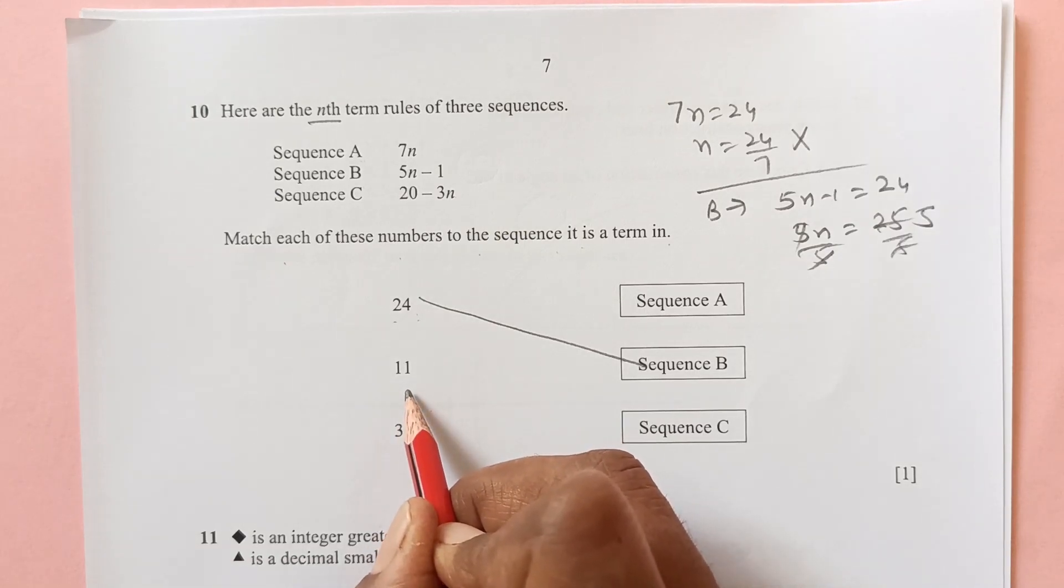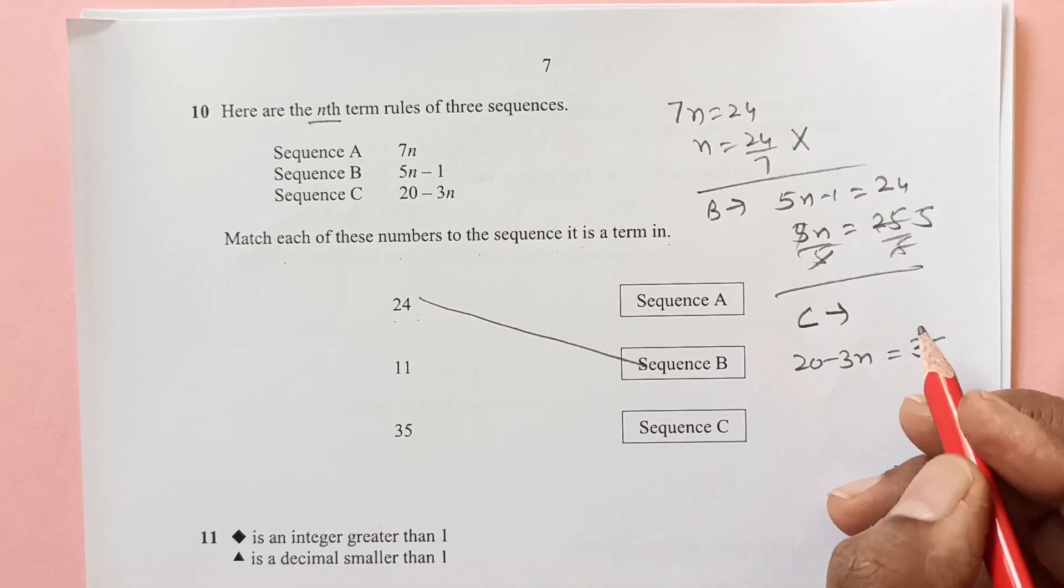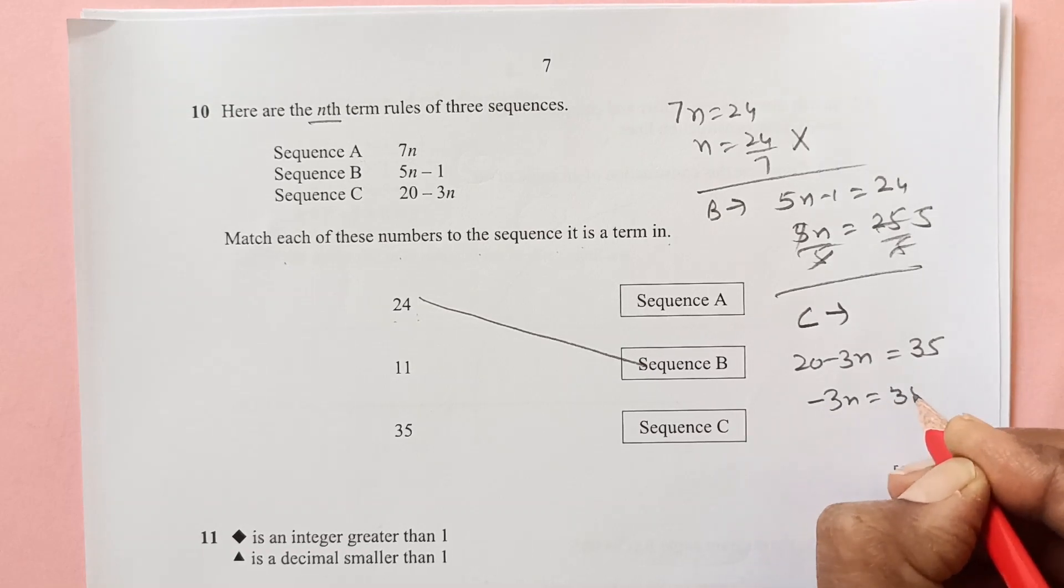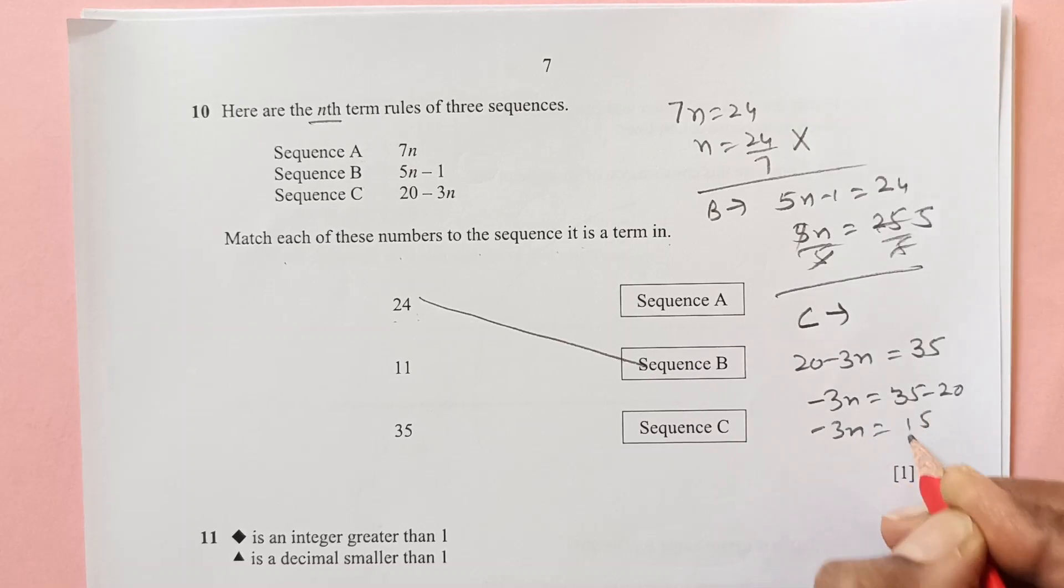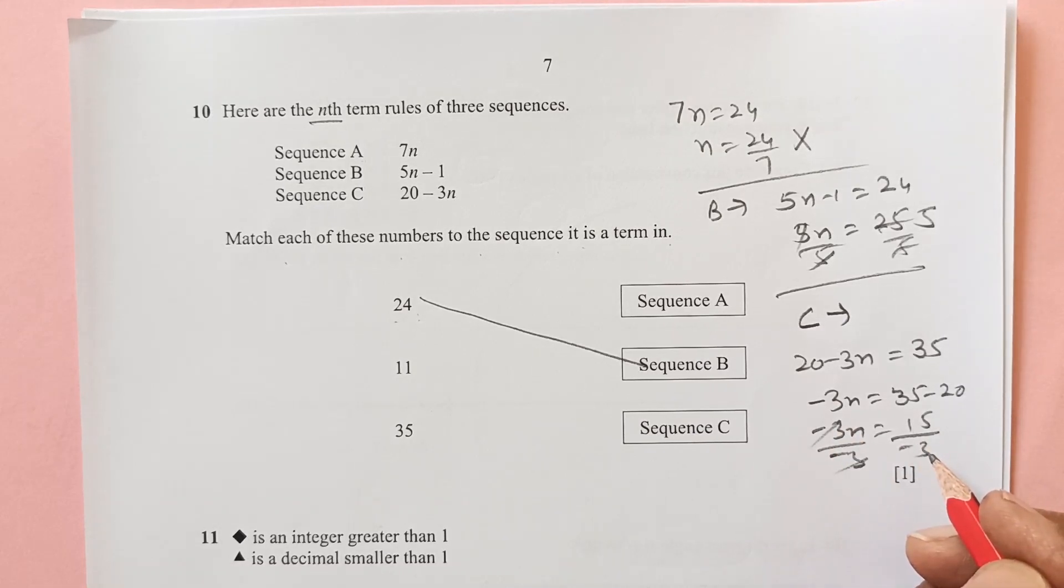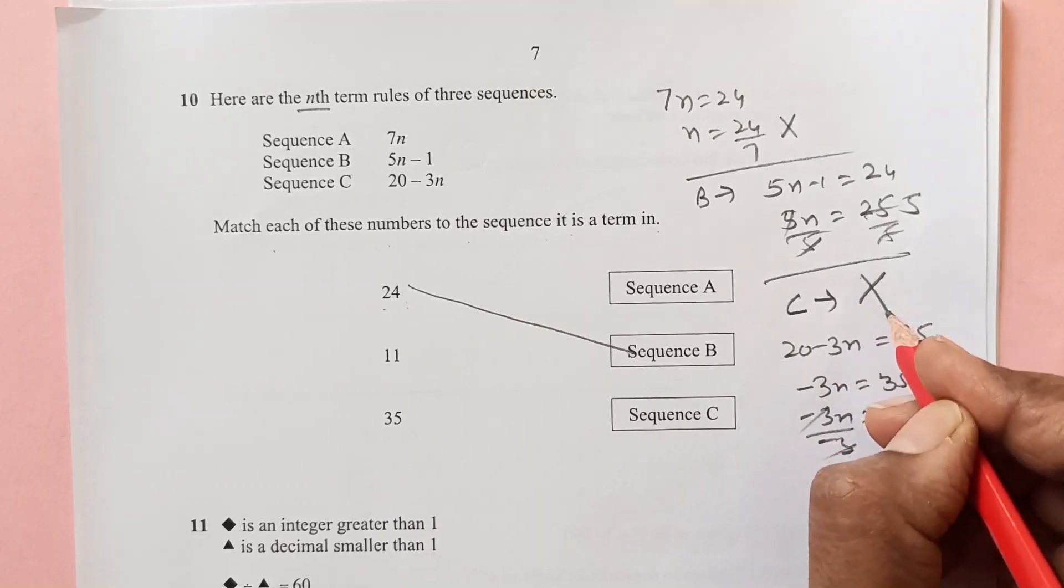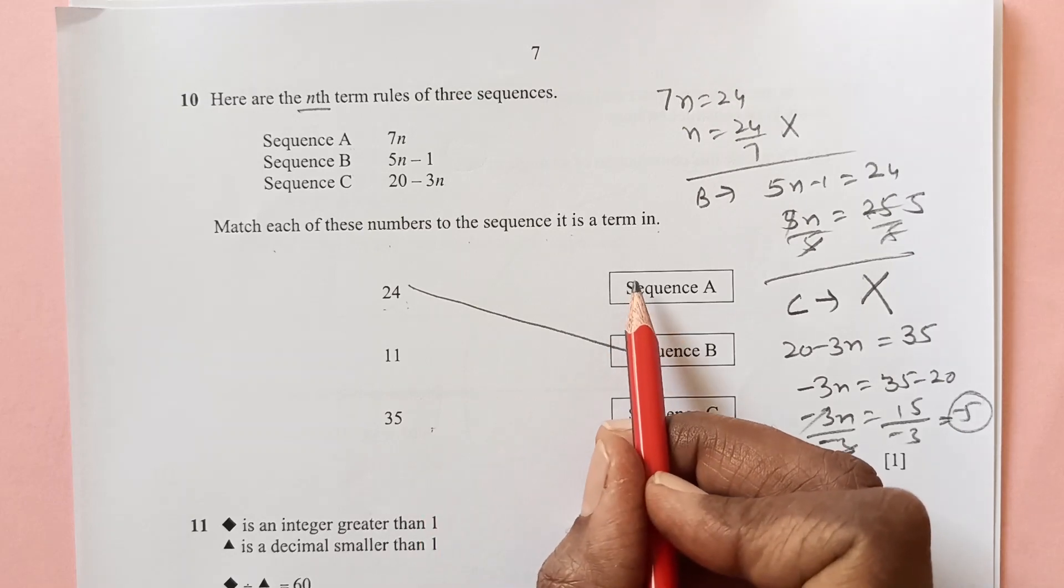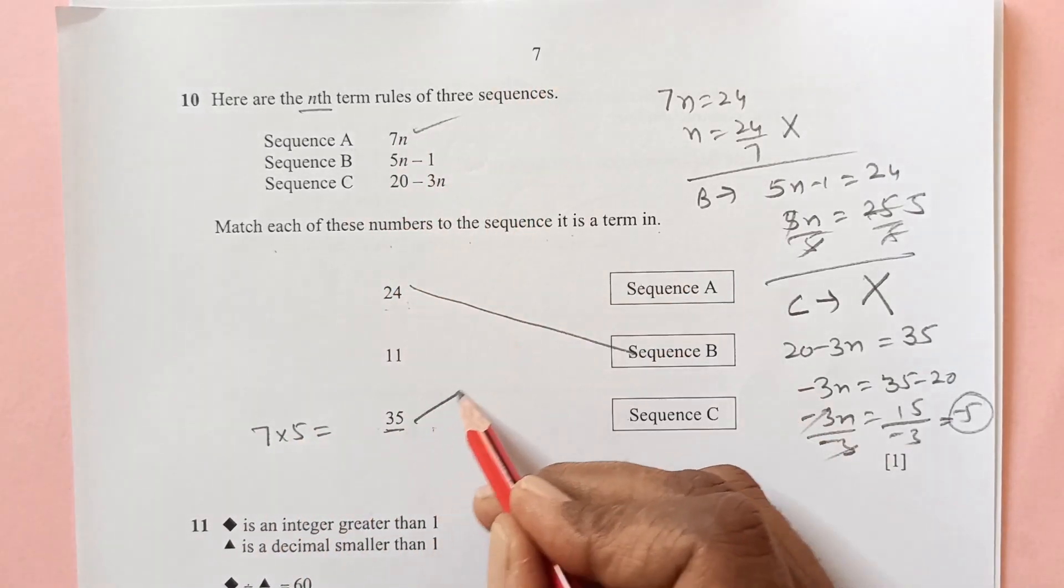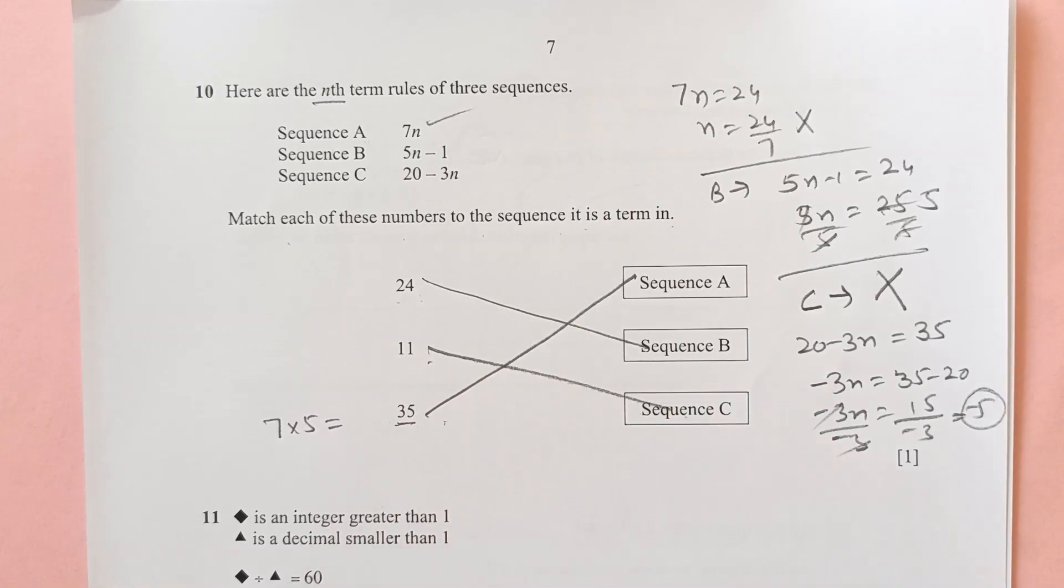Now for 11, for 11 we can start with C. That is 20 minus 3n equal. If you see 35, -3n equals to 35 minus 20, so -3n equals to 15 over 3. Again you have a number which is negative, negative 5. A number of term cannot be negative, so this doesn't go for C. Let's check this for A. 35 with A, you see directly here that is 7 times 5 is 35. That means this is the term of sequence A. And then 11 goes with the sequence C.